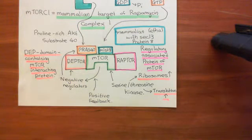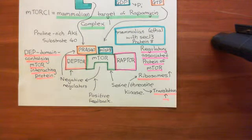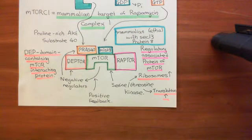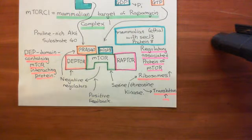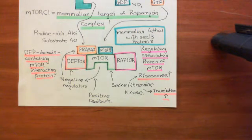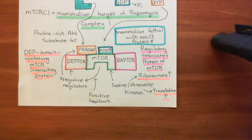So that's the PI3 kinase AKT-mTOR pathway. In the next video, we're going to look at another target of receptor tyrosine kinases, which is going to be phospholipase C-gamma enzymes. Then we'll move on to looking at the desensitization of receptor tyrosine kinases from the cell membrane in response to stimulation of those receptor tyrosine kinases.